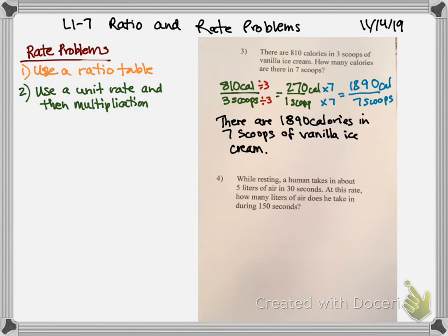While resting, a human takes in about 5 liters of air in 30 seconds. At this rate, how many liters of air does he take in during 150 seconds? So let me go ahead and write down what we have to begin with. 5 liters air. Seconds. And we want it to be 150 seconds.